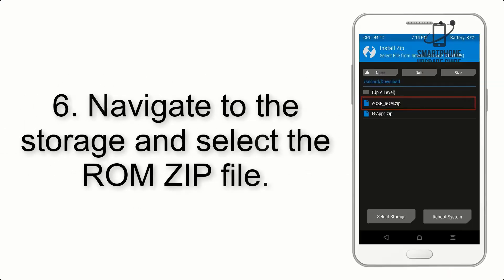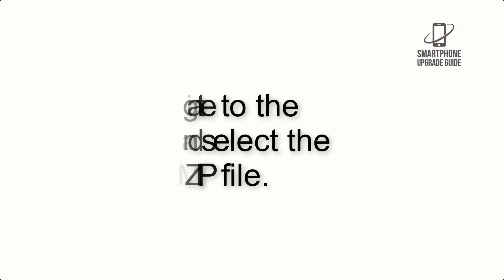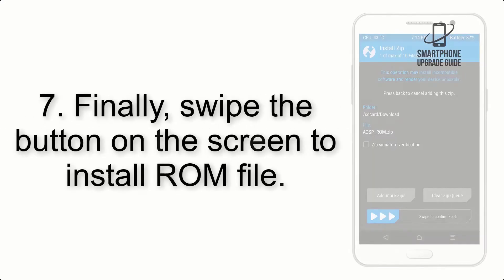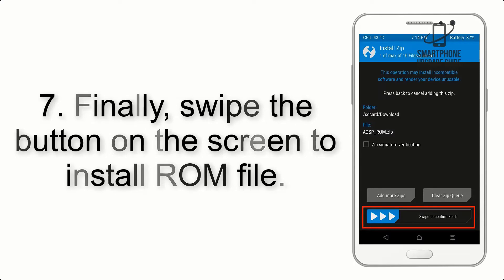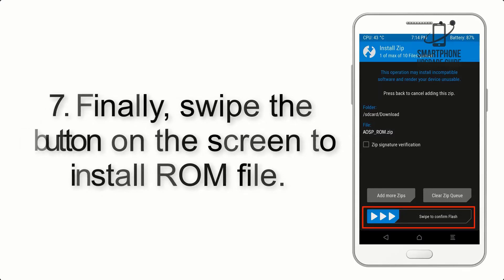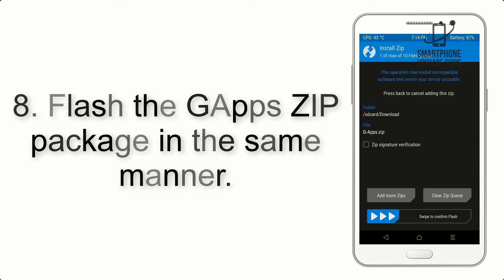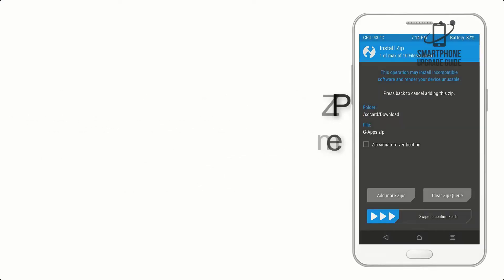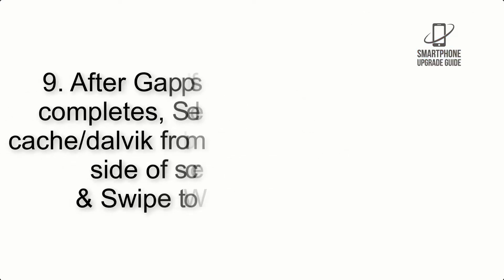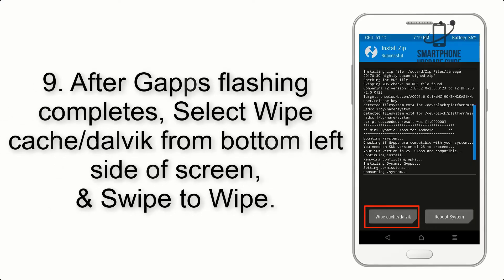Step 5: Go back to the recovery main screen and tap on the Install button. Step 6: Navigate to the storage and select the ROM zip file. Step 7: Finally, swipe the button on the screen to install the ROM file. Step 8: Flash the GApps zip package in the same manner.